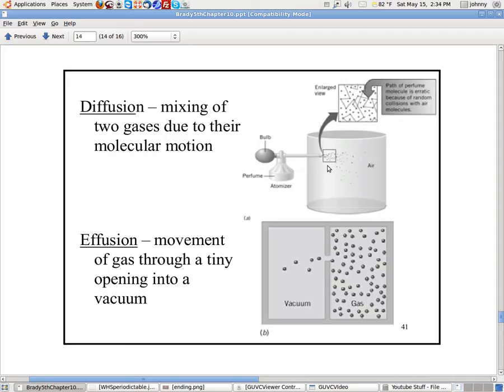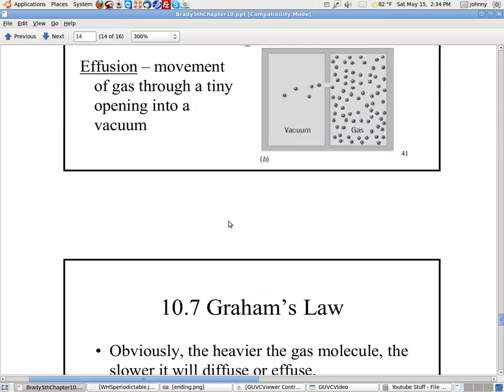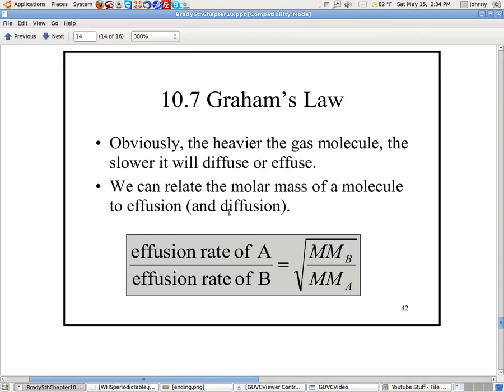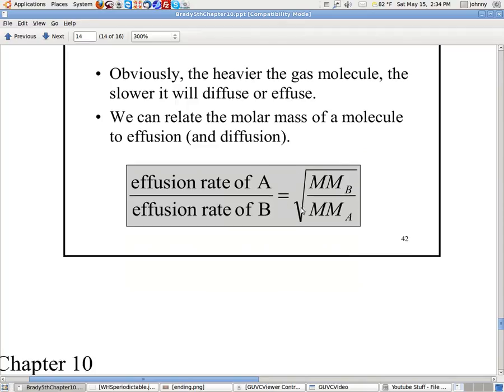Now the other type is effusion. It's just the movement of gas through a tiny opening into a vacuum. Anyway, you can look at these definitions and cover them and be fine. Next thing is Graham's Law. Out of section 10.7, it basically tells us this: The heavier the gas molecule is, the slower it will diffuse and effuse. So we can relate molar mass to basically how fast it moves no matter what, whether it's diffusion or effusion.